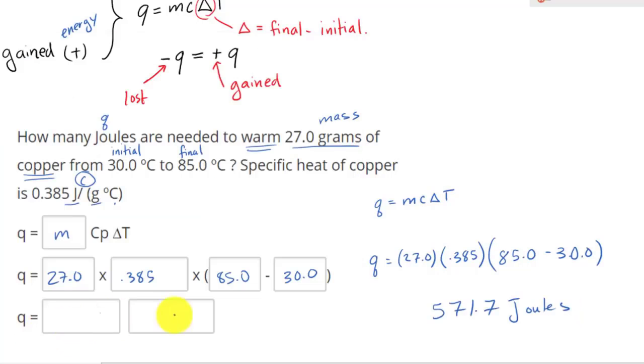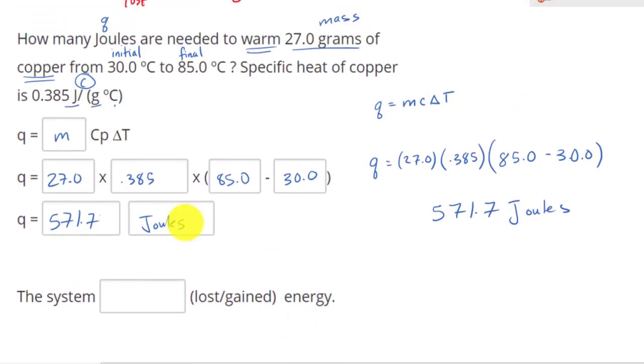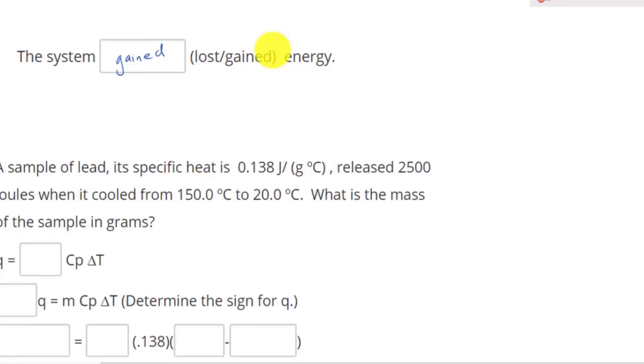And notice how I have two boxes. The first box is your number, and the second box is your unit. And in this case, if you notice, is the system gaining or losing energy? Well, this is a positive value, so this means it has gained energy. If it's negative, it would lose energy to the surrounding. So in this case, the system gained energy from the surrounding.